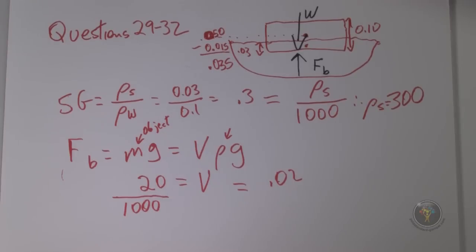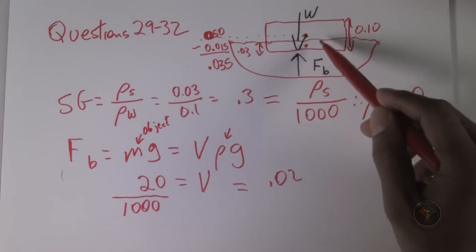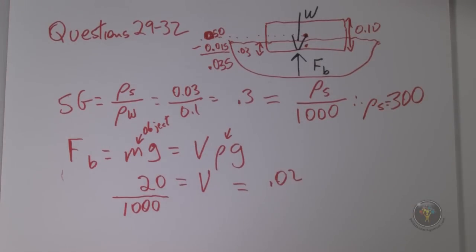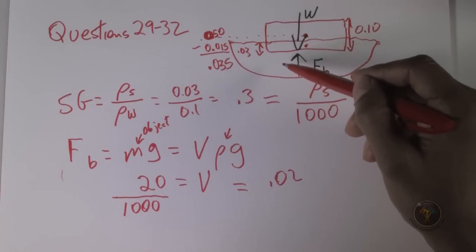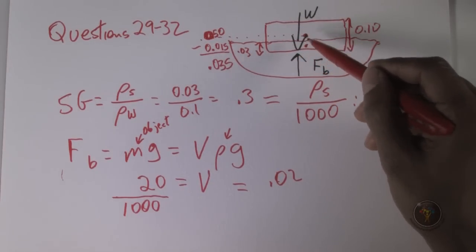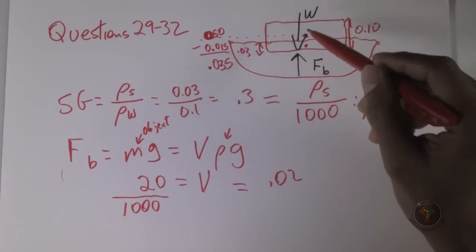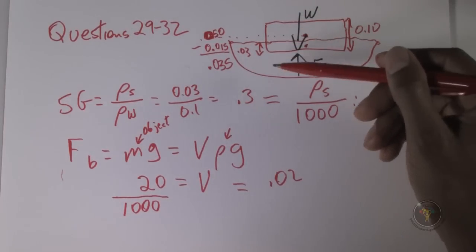Question 32: Suppose an object is placed on the log, with the line of action passing through its weight center. The object is to completely submerge the log — what is the smallest mass the object can have? To completely submerge the log, the average density of the log plus object must equal the density of water, so the specific gravity equals 1. First, we need the volume of the log.